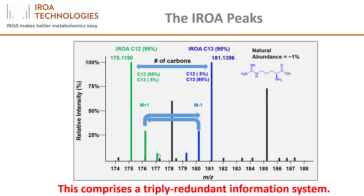If we were to create a sample that was a mixture of both the 5% C13 and 95% C13 forms of each molecule, we would end up with a mixture that has some very unique properties. Specifically, the number of carbons in the molecule is now proven unambiguously when the mass difference between the two monoisotopic peaks, the height of the C12 M plus 1, and the height of the C13 M minus 1 all define the same number of carbons. This collection of EROA peaks comprises a triply redundant information system. Error in such a system is almost impossible.